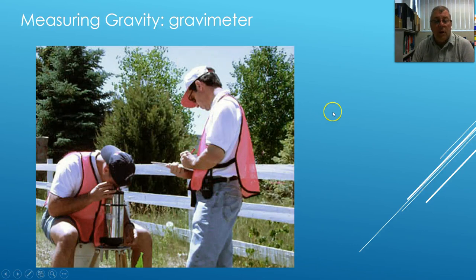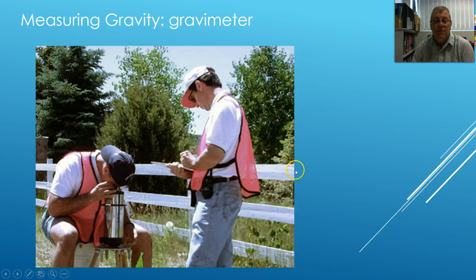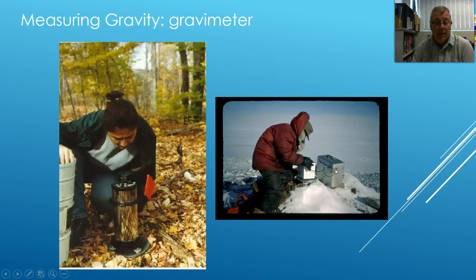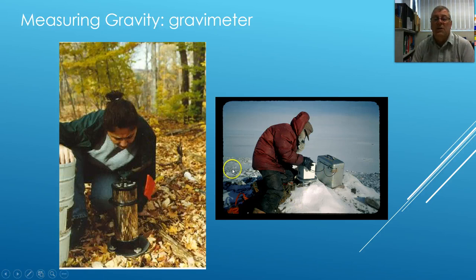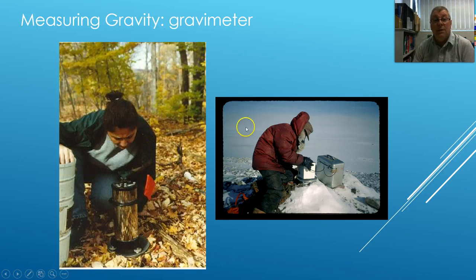People go around and map the gravitational field of the Earth on the surface. This is an optical early model — you'd look down and there would be a very fine scale to read. They take them all over the place — this is down in Antarctica. Basically, people are mapping the variations in gravity because when you measure it down to six decimal places it changes due to the rocks and strata that the Earth's crust is made of.